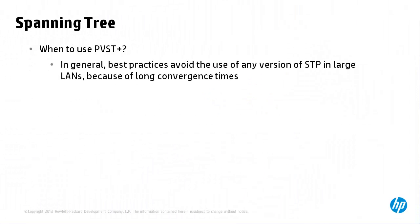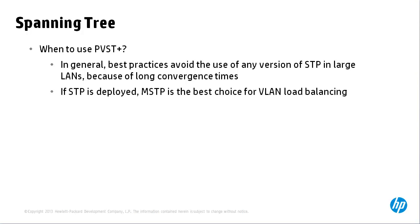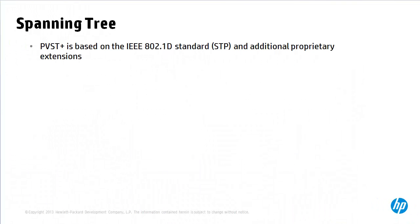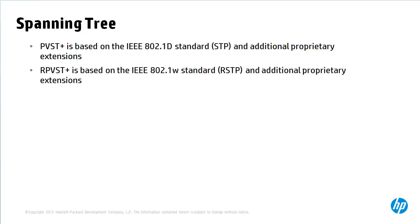So when should you use PVST? In general, best practices avoid the use of any spanning tree in a large LAN because of the long convergence times — IRF would be a better option in many cases. If spanning tree is deployed, multiple spanning tree is the best choice for VLAN load balancing. PVST is only recommended when integrating Comware-based switches into an already existing PVST implementation. PVST Plus is based on IEEE 802.1d with additional proprietary extensions, and Rapid PVST Plus is based on IEEE 802.1w — both are Cisco proprietary protocols.